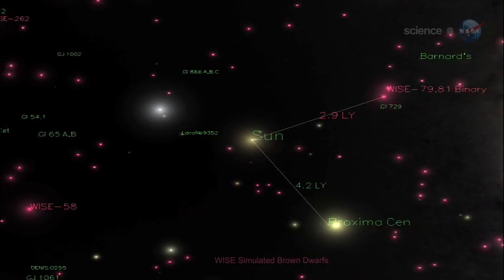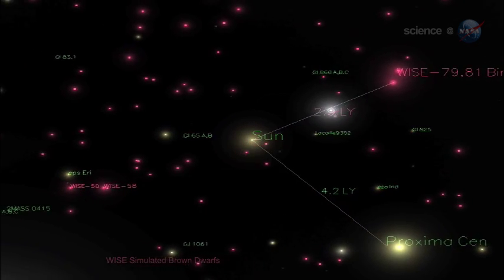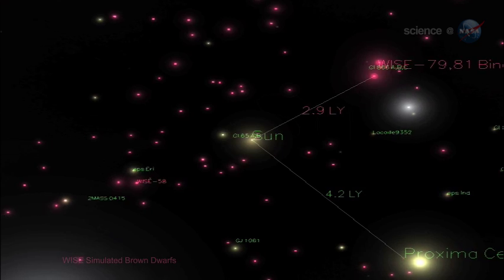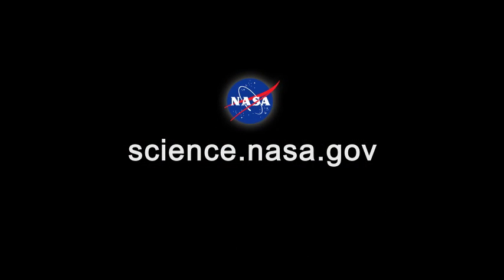With WISE, we may even find a brown dwarf closer to us than the closest known star, Proxima Centauri. Now that would be pretty cool news. For more information about stars, hot and cold, visit science.nasa.gov.